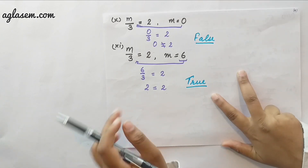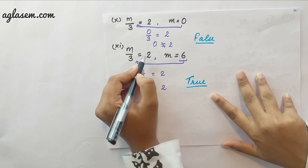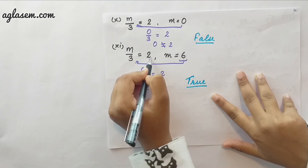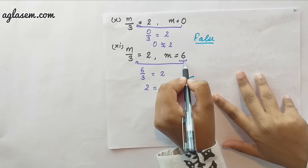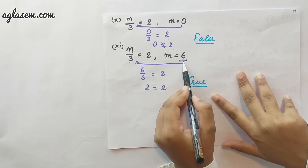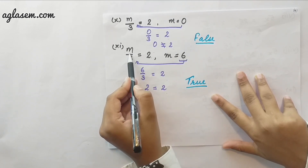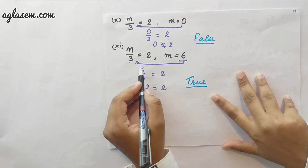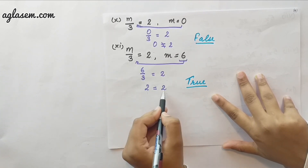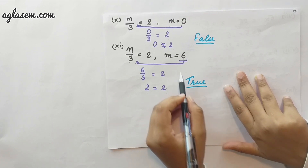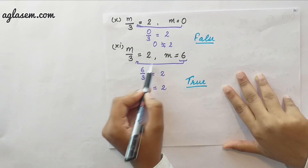In the next question, the equation is m by 3 equals to 2 and the value of m is 6. We put 6 into the equation: 6 by 3 equals to 2. 2 is equal to 2, therefore this value of m satisfies the equation.